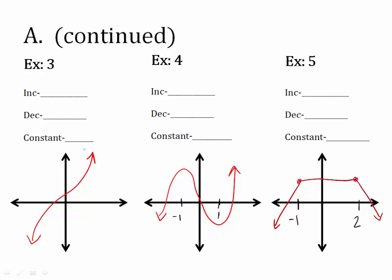Looking at these examples, we always read the graph from left to right because it's domain. For Example 3, as I move left to right, the graph is going uphill and continues to go uphill forever — it never starts going downhill or becomes horizontal. So the increasing interval is from negative infinity to positive infinity. Decreasing: none. Constant: none.